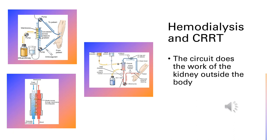Hemodialysis and CRRT are the same thing — one just runs slower than the other. Hemodialysis can run from two to four hours and we can take off anywhere from nothing to three or four liters off a patient in that time — that's a big fluid shift. If the patient's blood pressure is unstable or they're very sick, we're going to do CRRT, which means continuous renal replacement therapy. It still runs as hemodialysis but runs 24 hours a day, taking off 50 to 150 cc's an hour. We can also take off nothing if we just want to clean the blood a little bit.